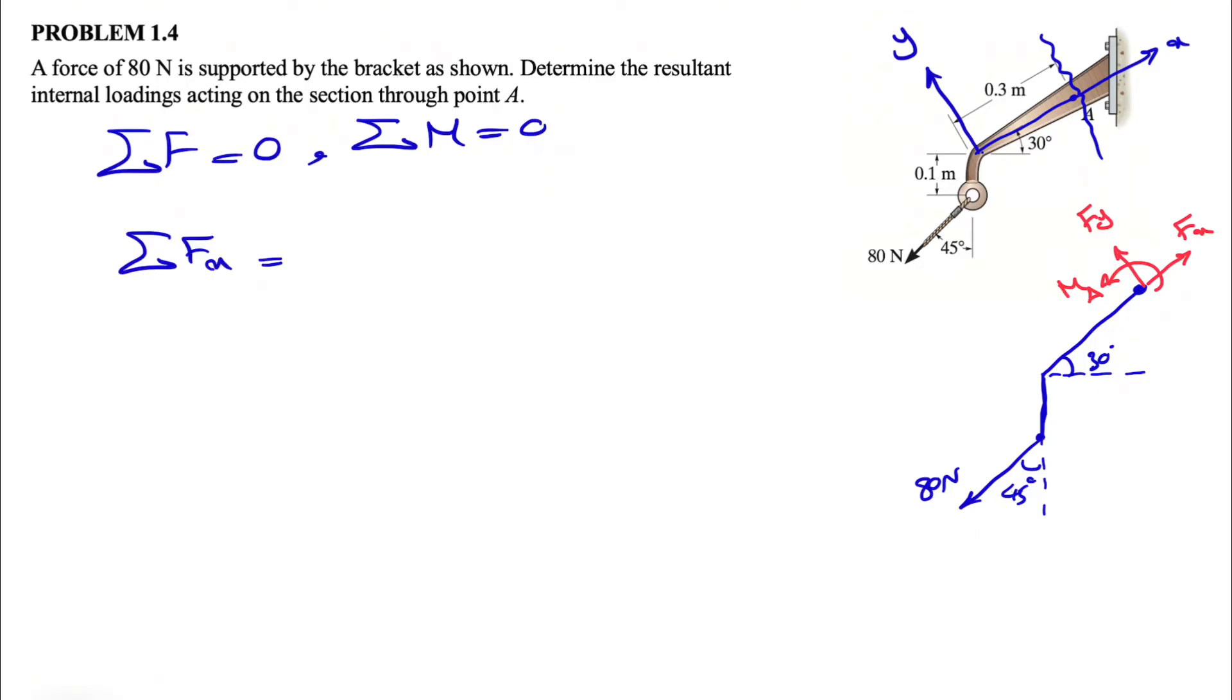Let's start with sum of all forces in X direction. What we need to figure out is that this is our X direction, and we have these two parallel lines. This angle here would be 30 degrees, meaning this angle is 45 minus 30 or 15 degrees.